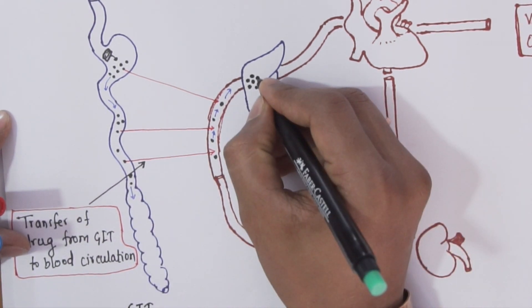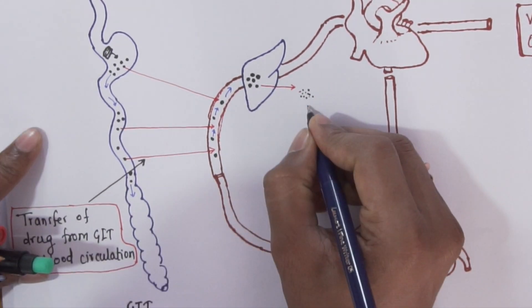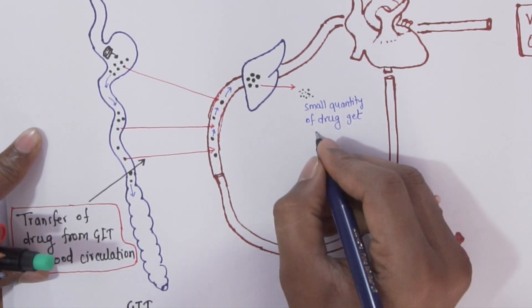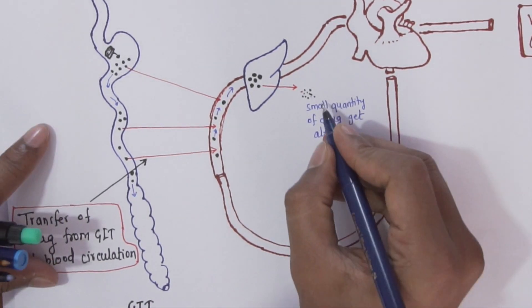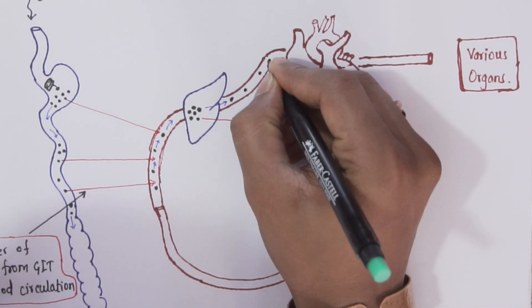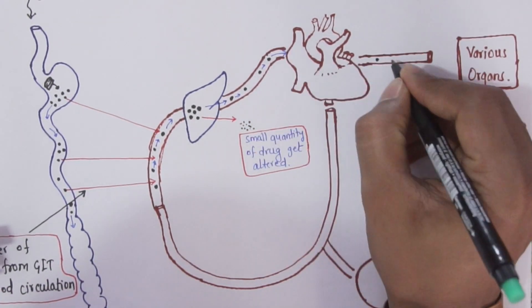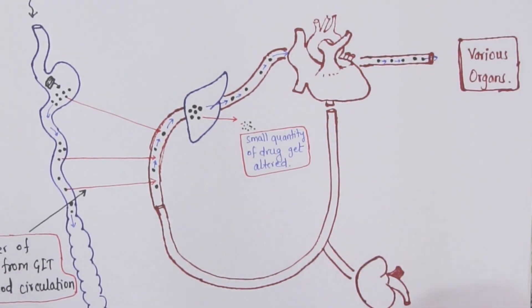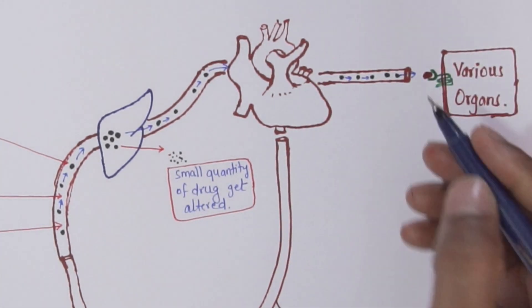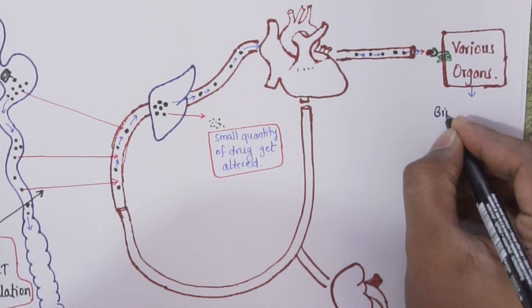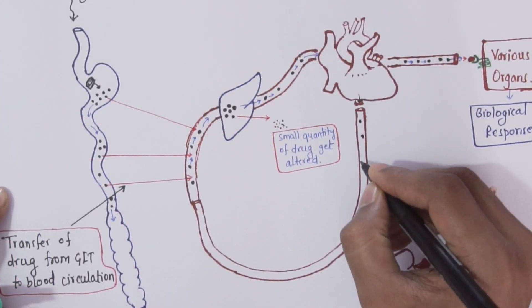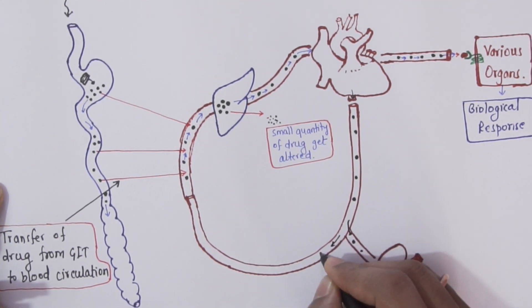Once drug will reach to circulation, it moves toward liver where a small quantity of drug gets altered or destroyed. Since the drug is passing liver first time, this process is called first pass metabolism. The remaining drug will move towards heart where it gets distributed to various organs. Each organ has a specific type of receptor on which the drug will bind and the cell or the organ will show some biological response.